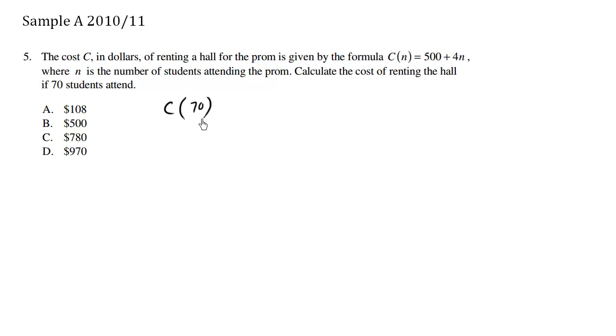So the cost when 70 students arrive at the prom is going to be 500 plus 4n, where n is 70. This is a basic function. So we simply plug in n equals 70 and we solve for it.